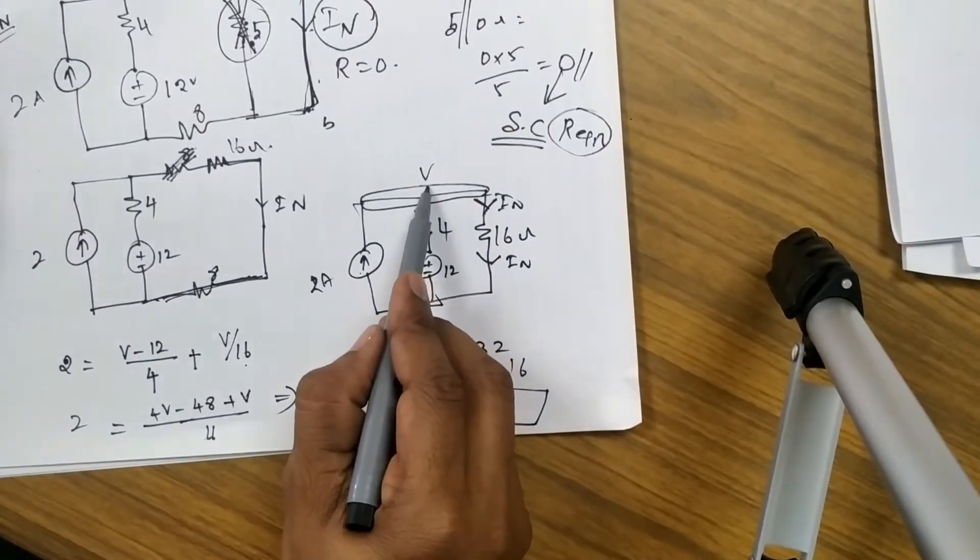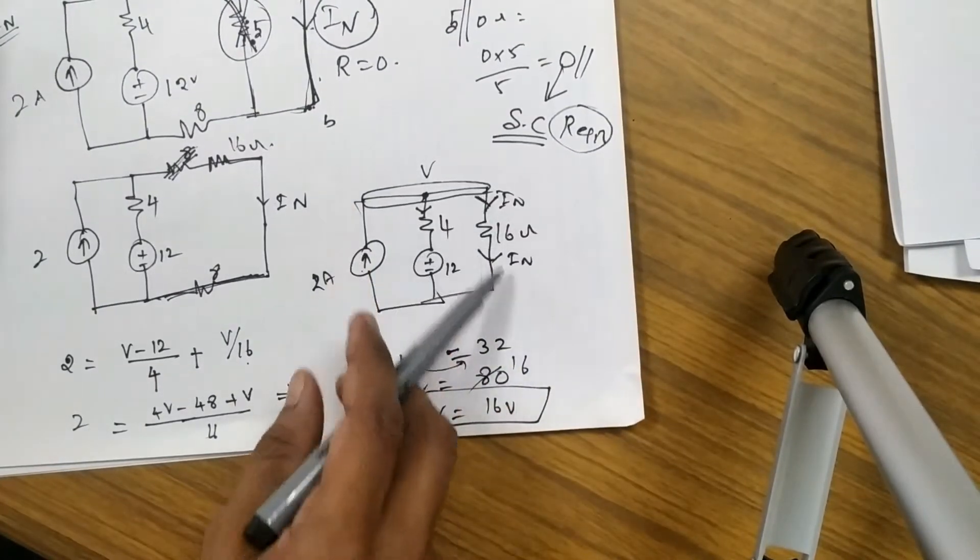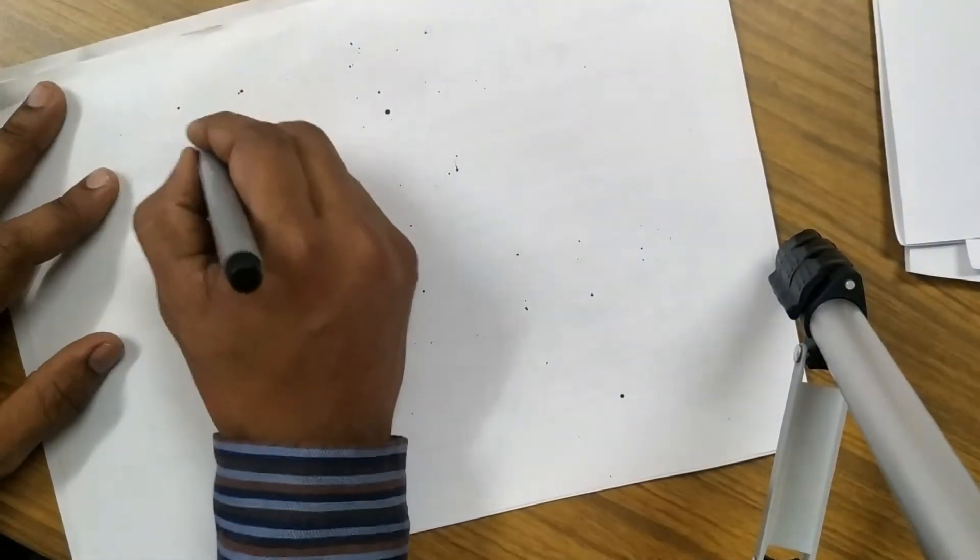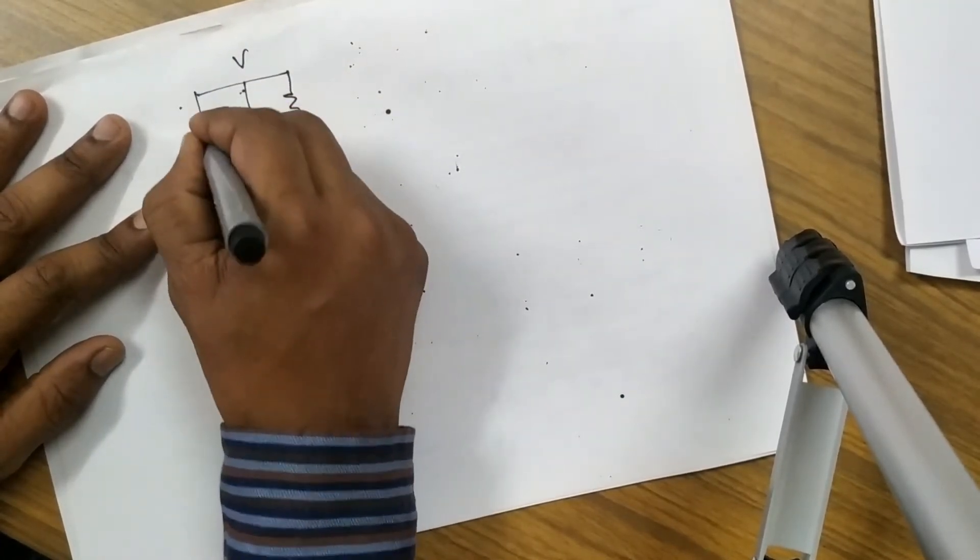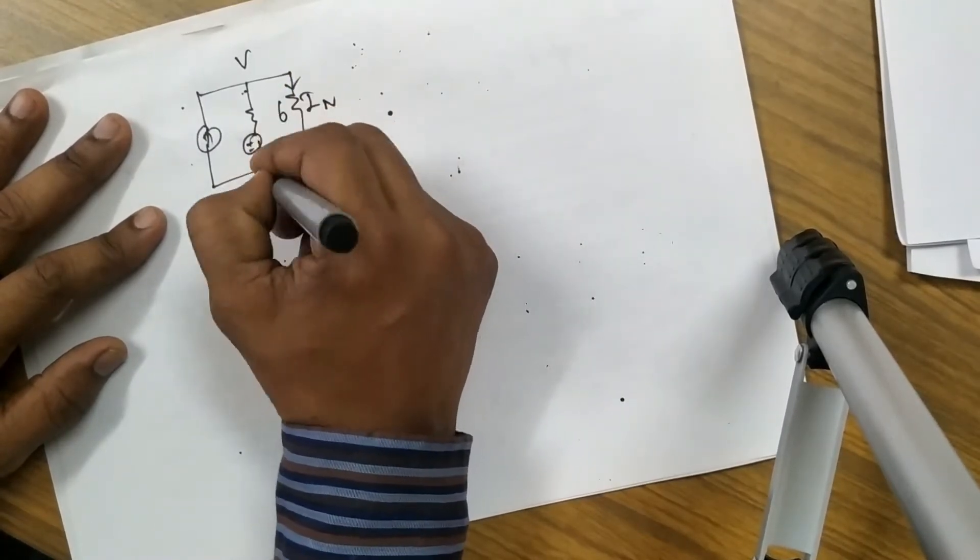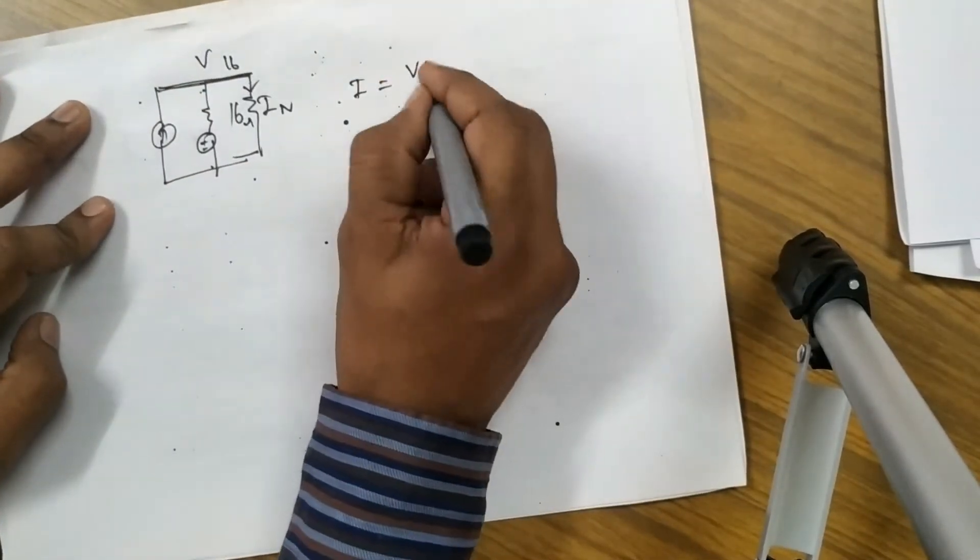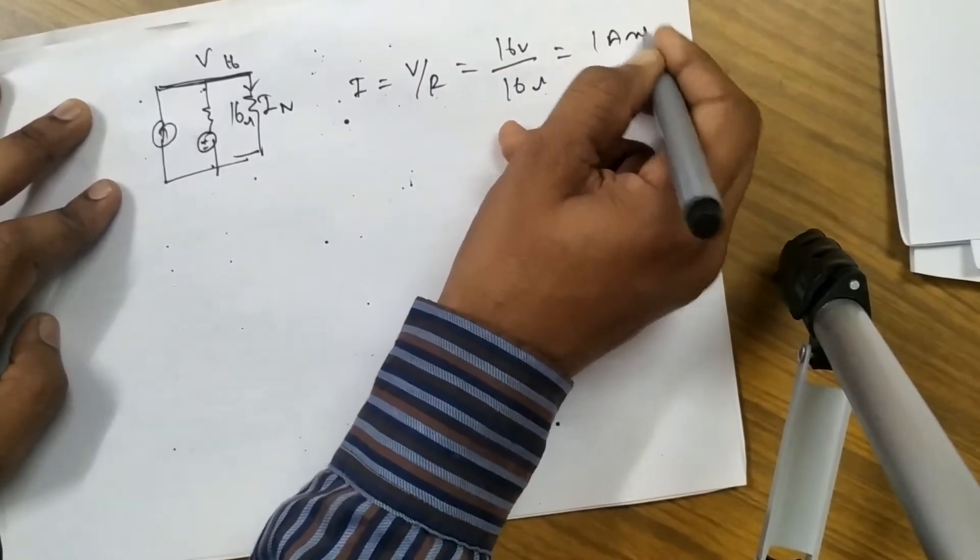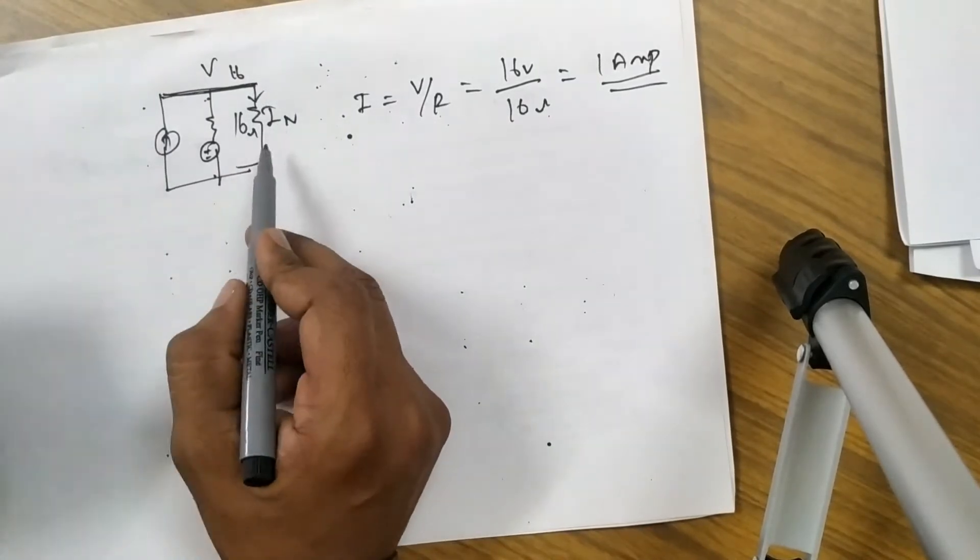So this V is 16V, with the help of this we can find out the current, what is that 16 by 16, we will get In value. What is the current flow through this one? 16 ohm, this drop is 16, so I equal to V by R, V is 16 volt, divided by 16 ohm, you will get 1 ampere. 1 ampere is the current flowing through this one, that is nothing but the In value.